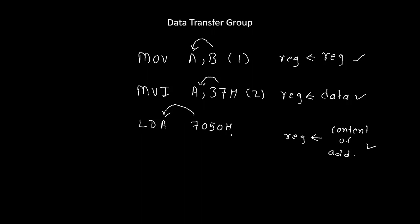LDA 7050H is a three-byte instruction because a four-digit number is given. The first byte is LDA, the second byte is 70, and the last byte is 50. So data transfer group instructions can be either one-byte, two-byte, or three-byte instructions. That's all about the data transfer group.